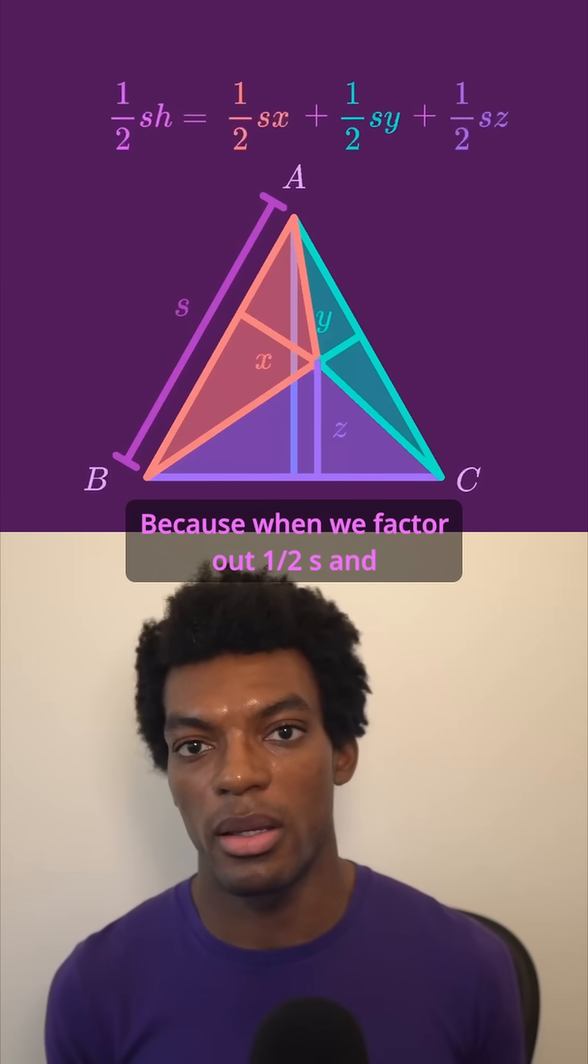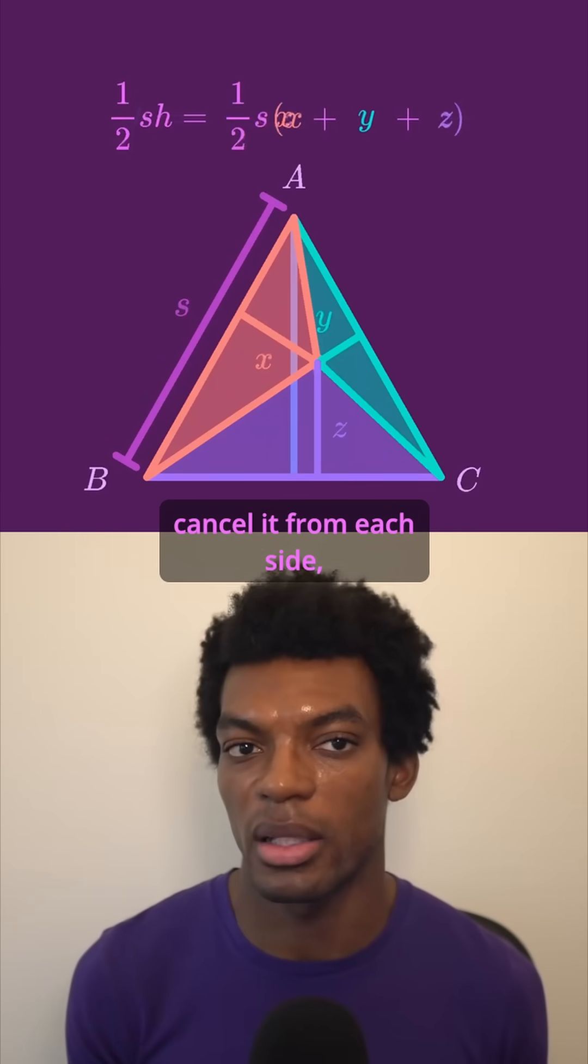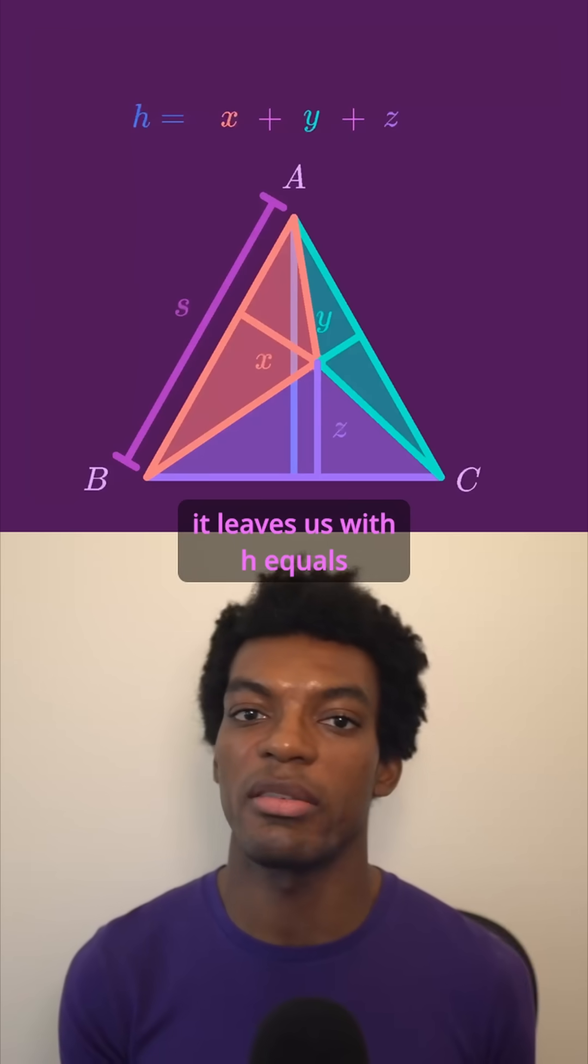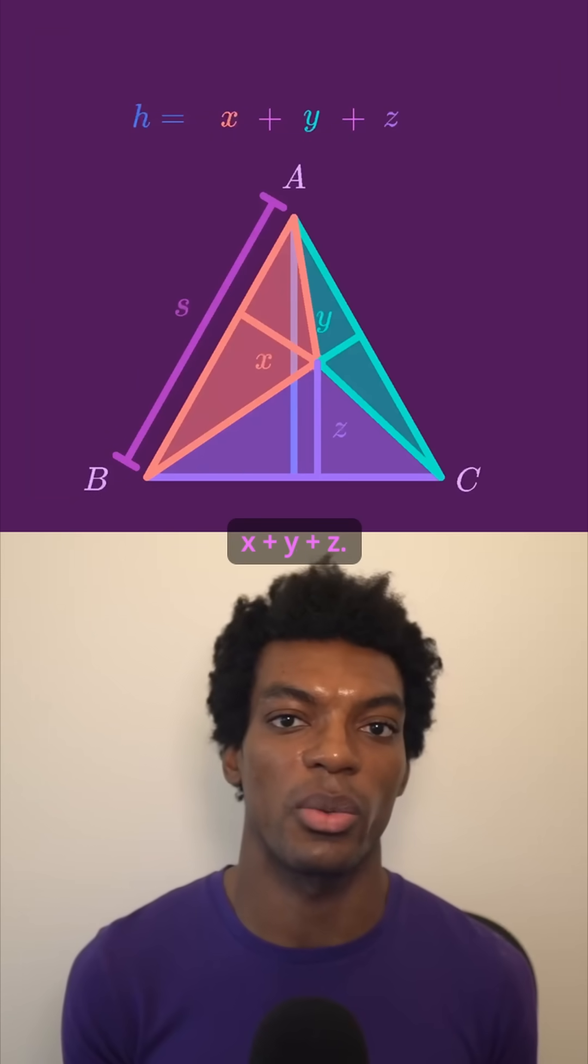And that's pretty much all we need, because when we factor out 1 half S and cancel it from each side, it leaves us with H equals X plus Y plus Z.